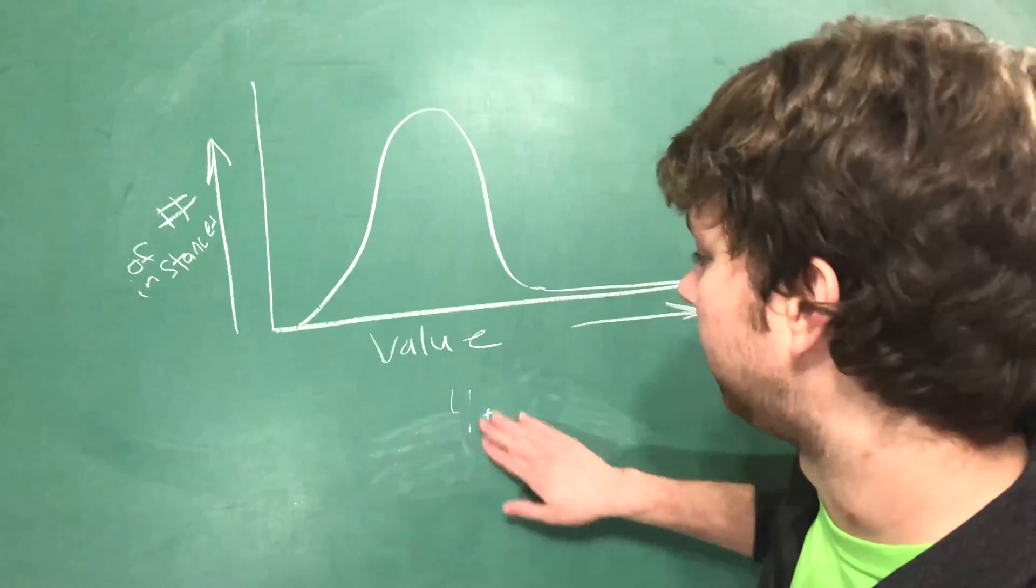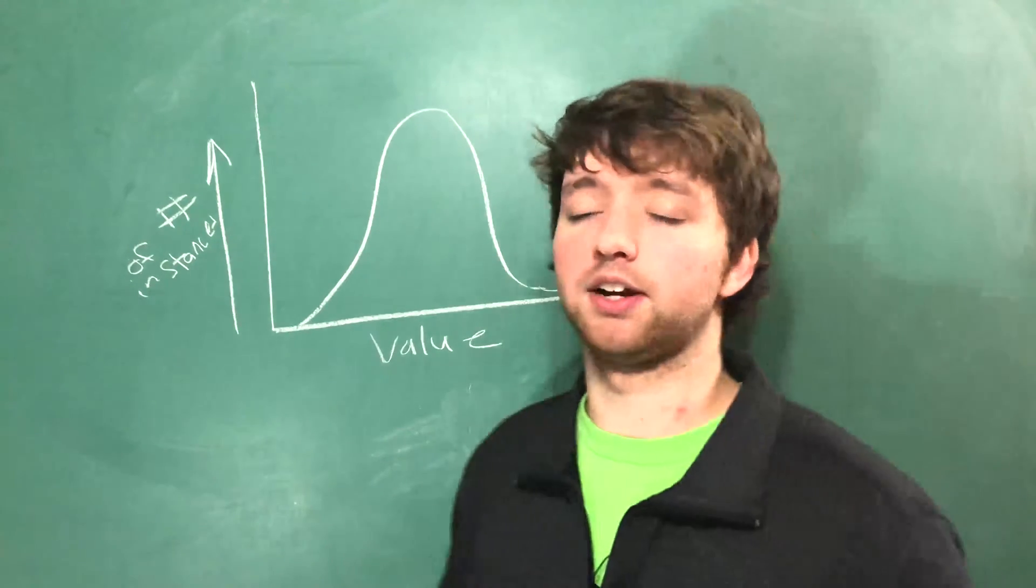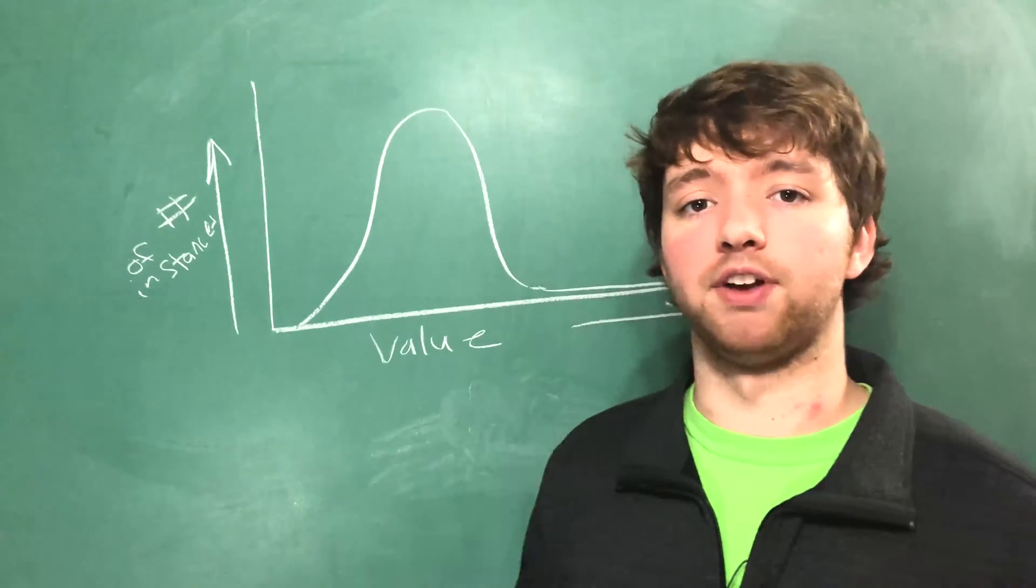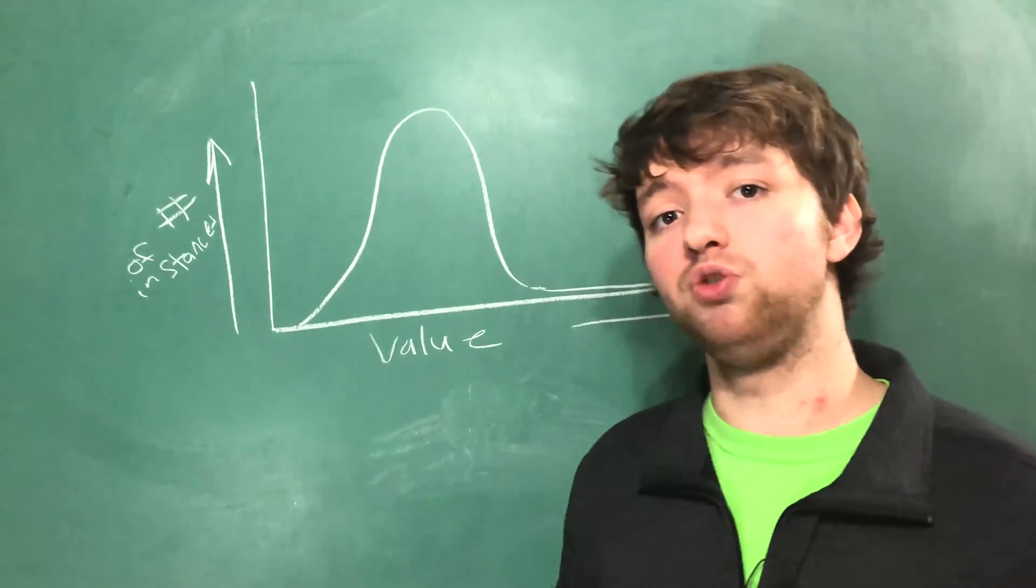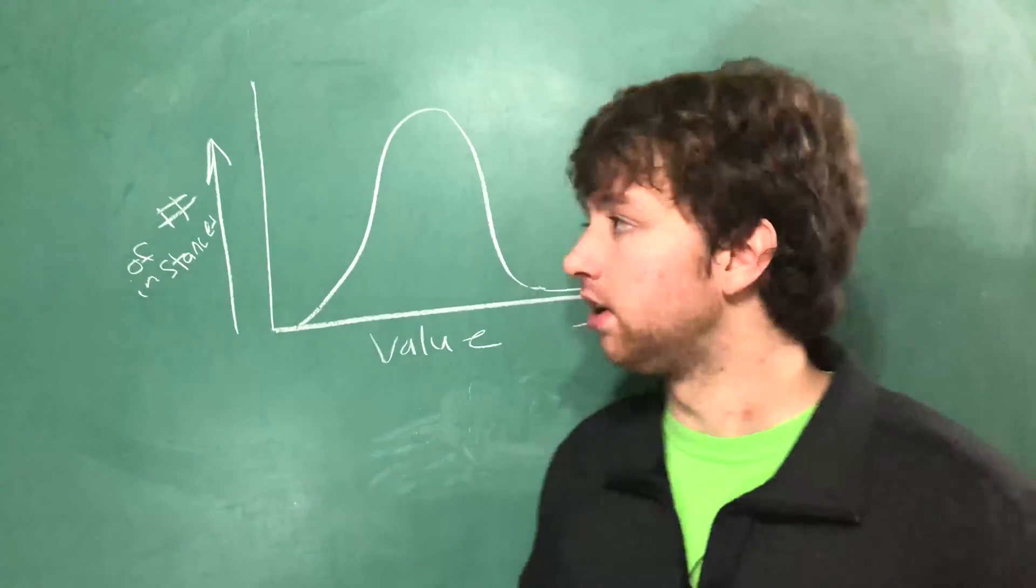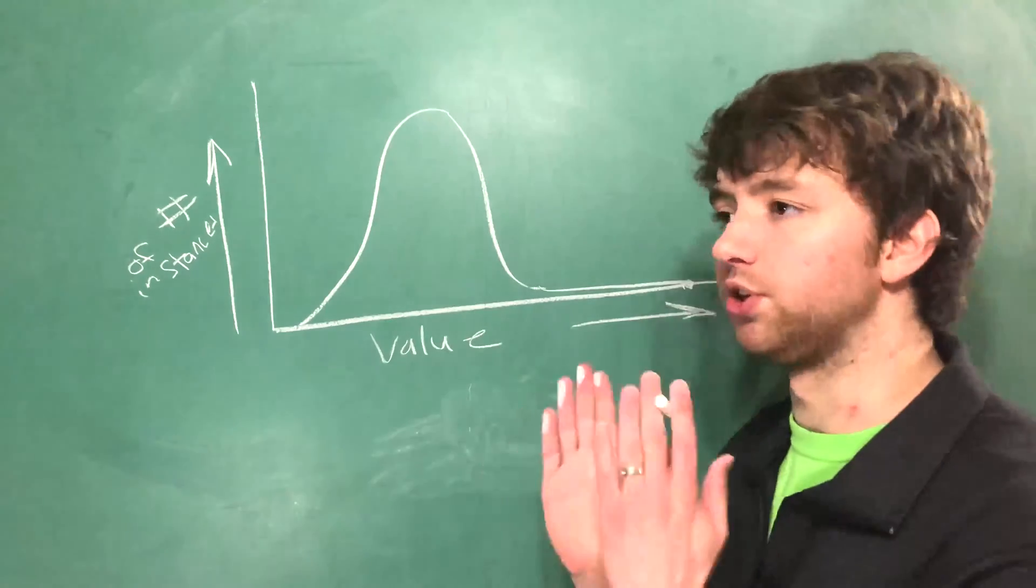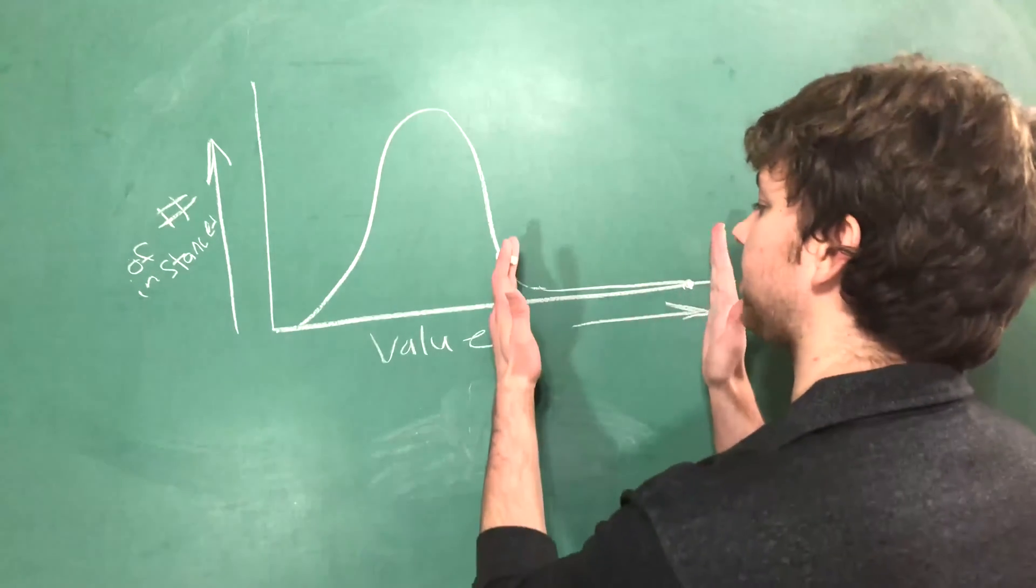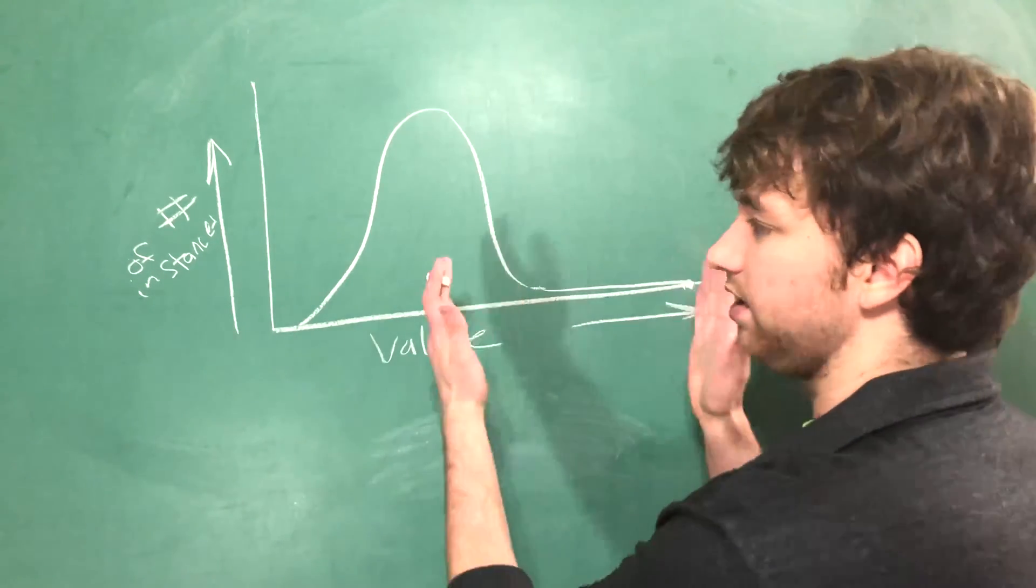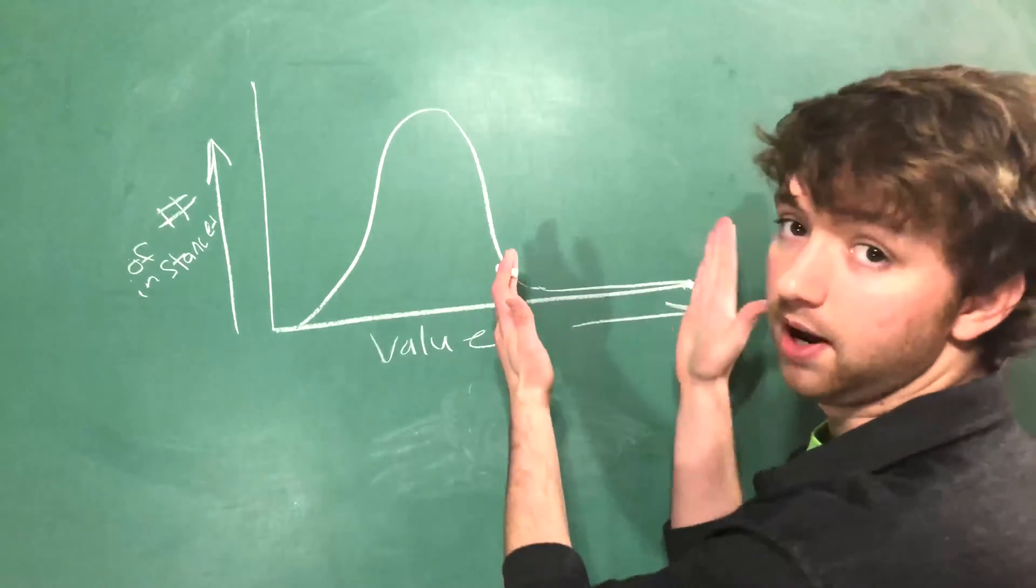So you got to really be careful with the outliers they affect how our algorithms work they affect how our data looks which is a huge thing once we start talking about data visualization. This chart could look a whole lot prettier and a lot more useful if we didn't have this section right here that is only contributing a very small amount of information.